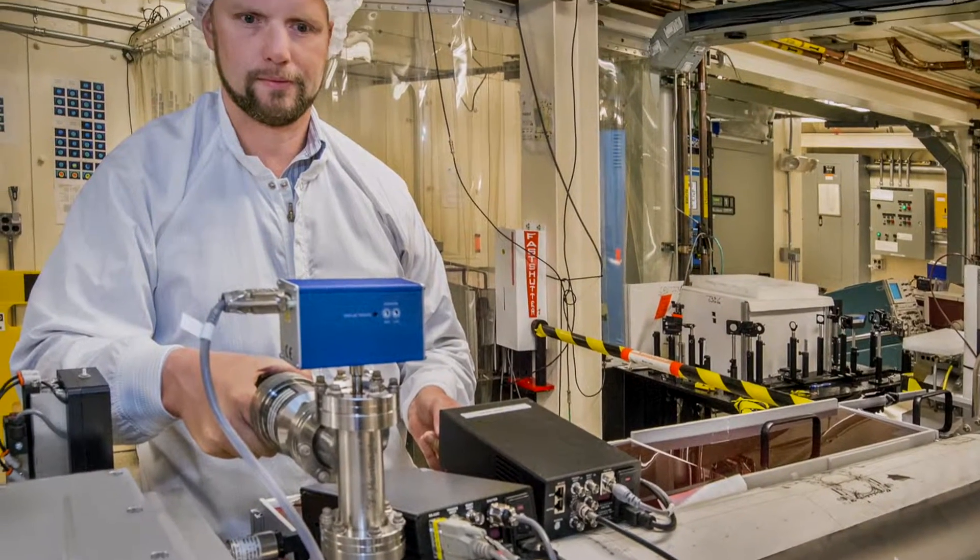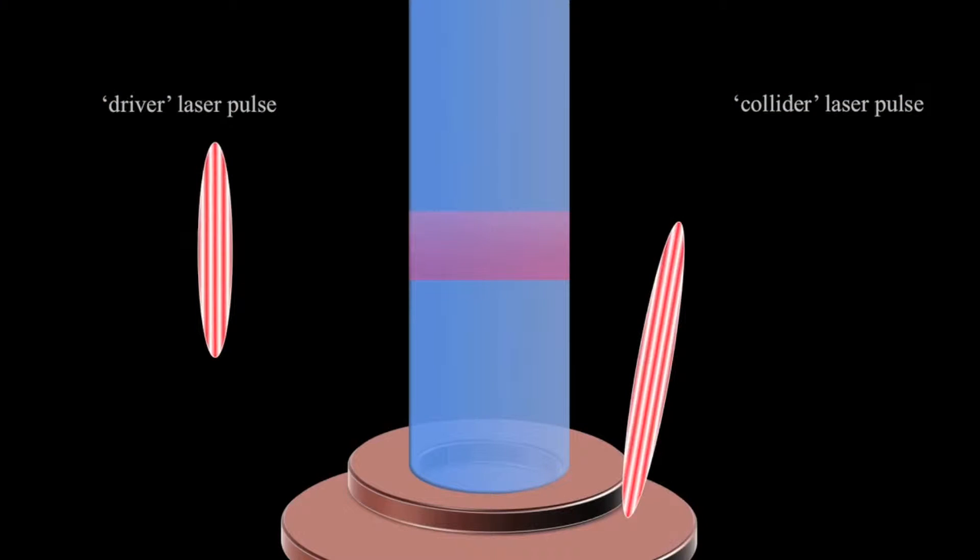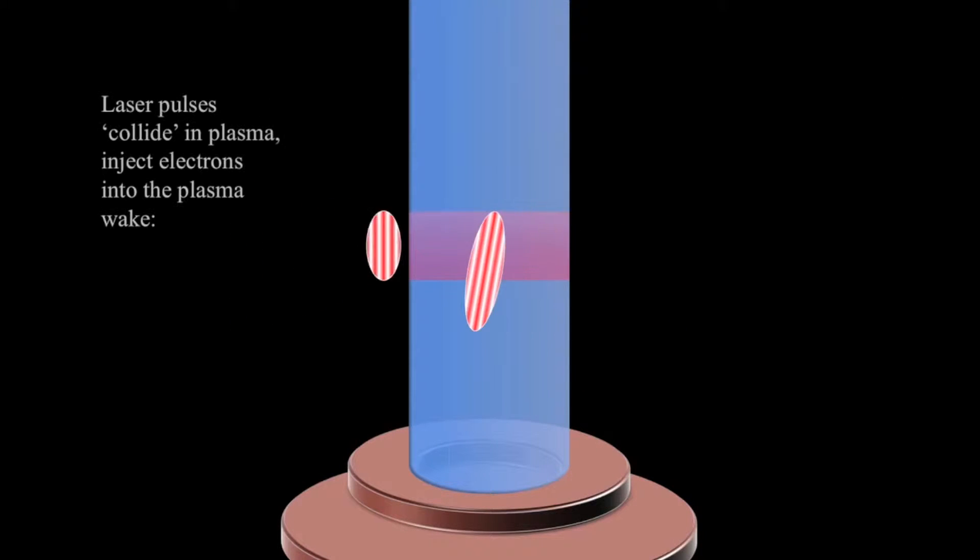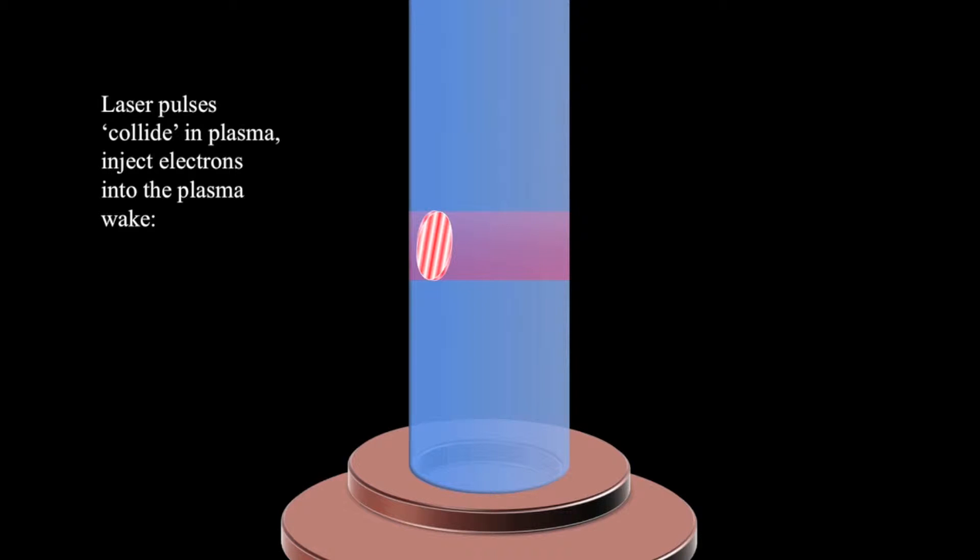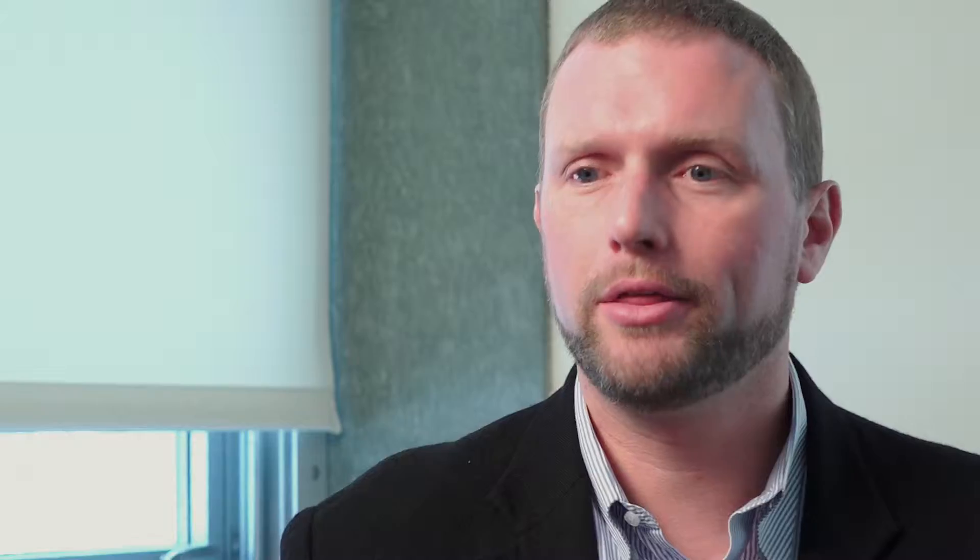To use a laser to accelerate particles, we have to change the laser whose field is perpendicular to its direction of propagation to create a field that goes along the direction of propagation so that it can accelerate particles. The way that we do that is by using the plasma.